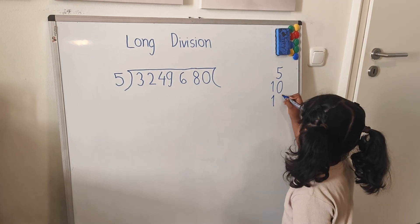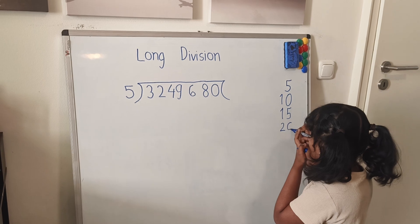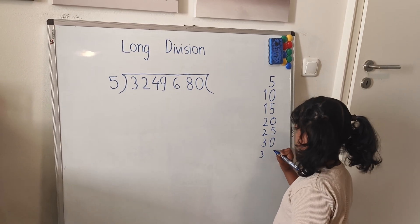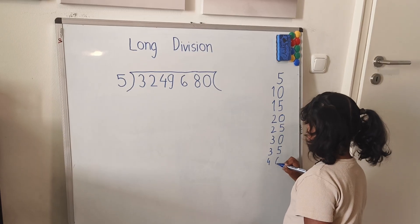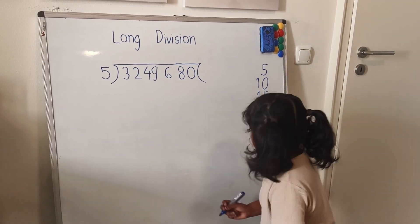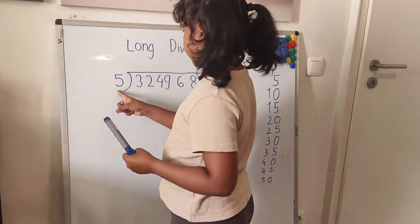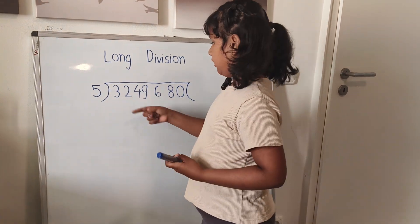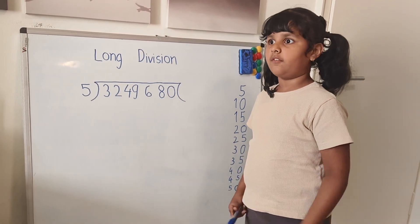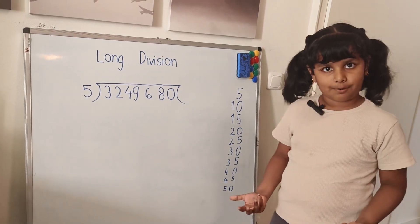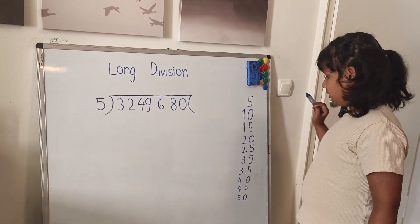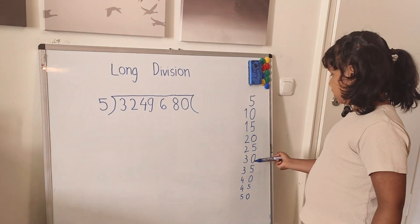Okay, so I will turn the table for 5. Five times 1 is 5, five times 2 is 10, five times 3 is 15, five times 4 is 20, five times 5 is 25, five times 6 is 30. If there is a similar number it's okay, if there's not that number, I will take the last number.